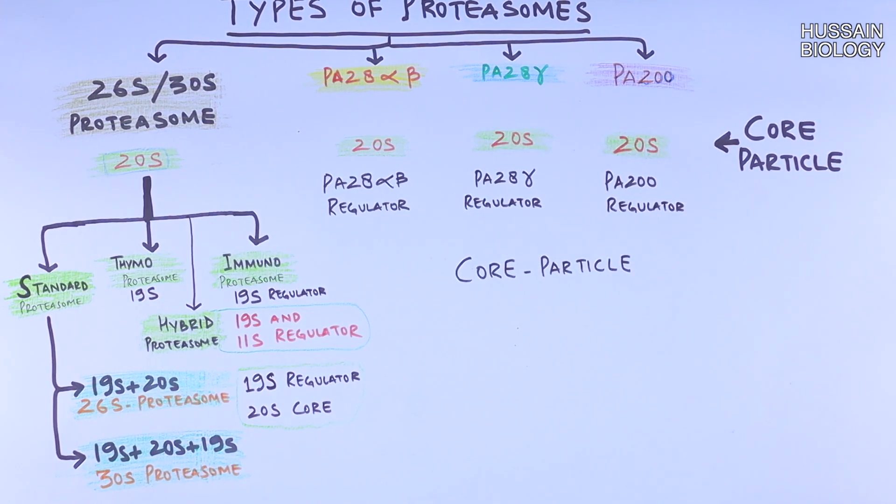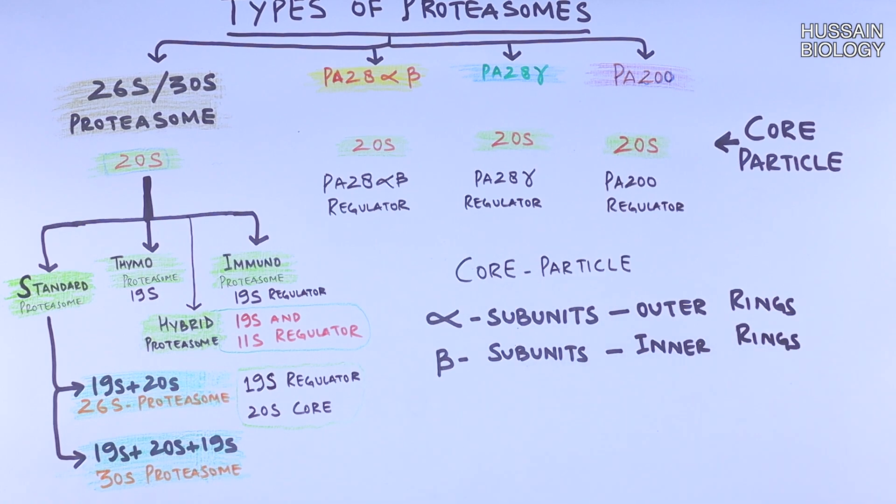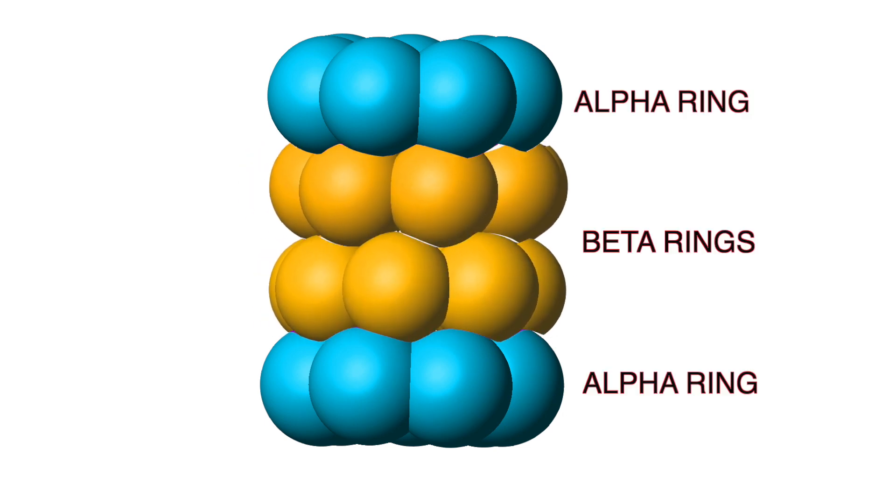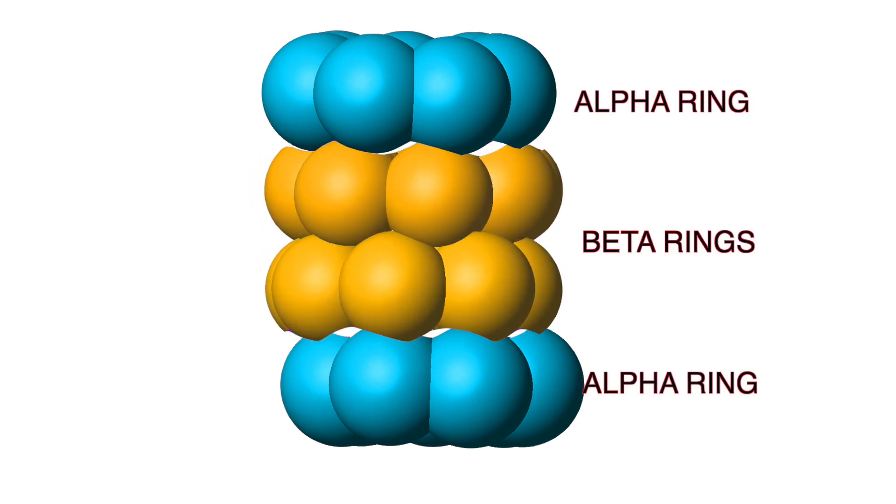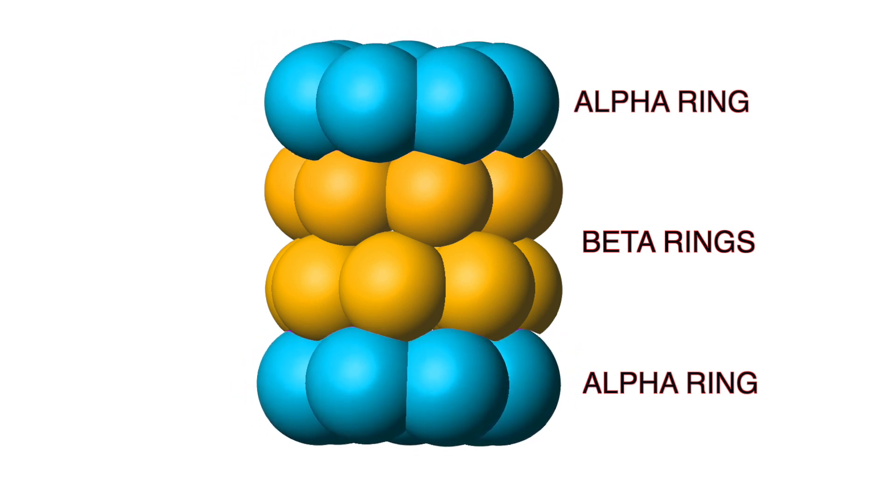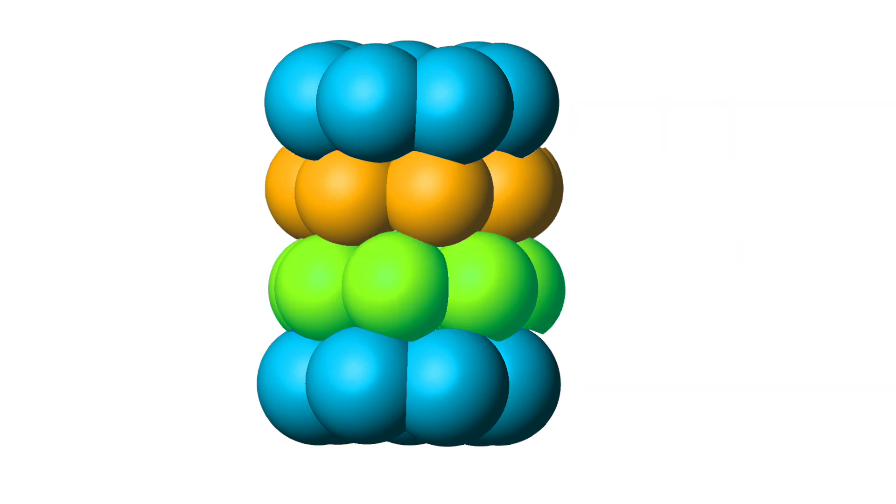Here in the diagram we can see the 20S core. First we have the two inner rings which are the beta subunits, then we have the two outer rings which are the alpha subunits, that we have already seen in this video. So what makes the difference in these 20S cores? It's the modification in beta ring residues which contribute to the different types of proteasomes.